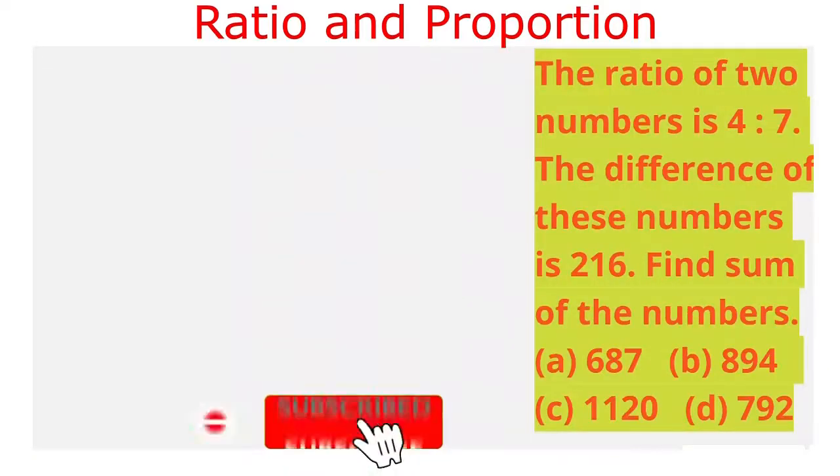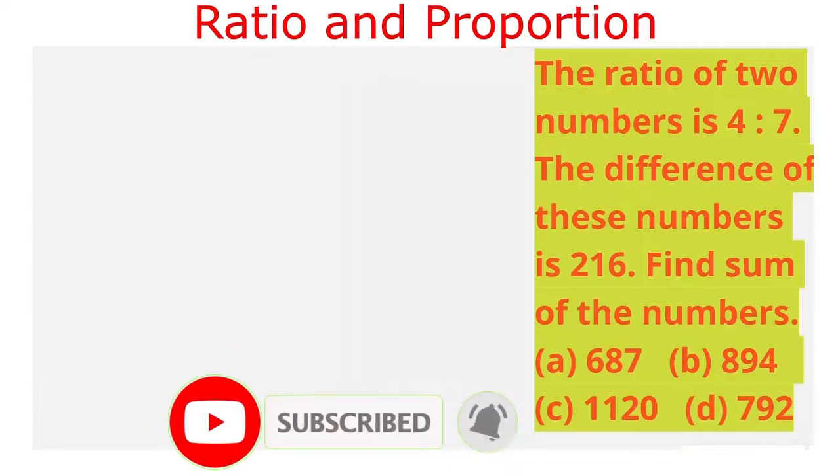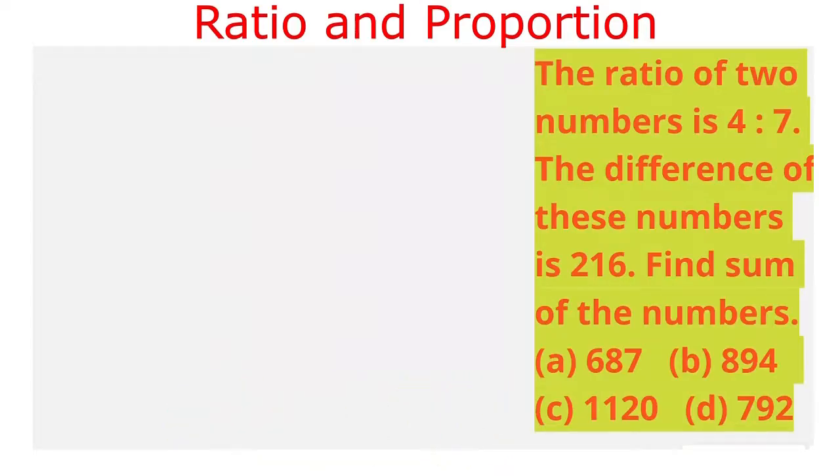We can solve this question orally from the given options. As given to us the numbers are in the ratio 4:7, and their sum is 4 plus 7 is 11. If we observe the given options, the number must be divisible by 11.